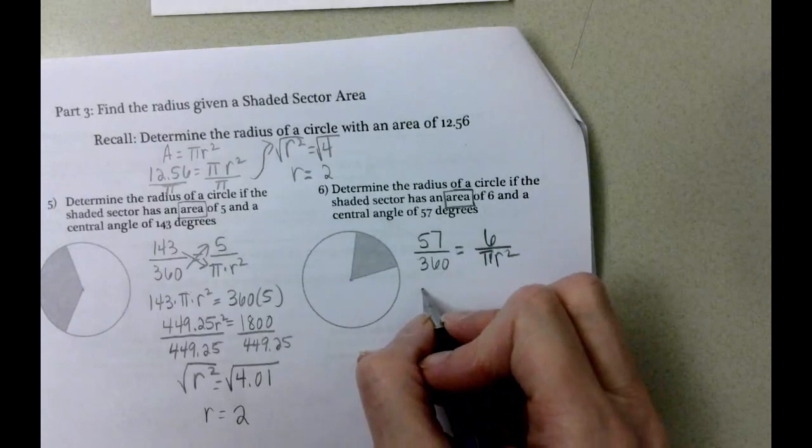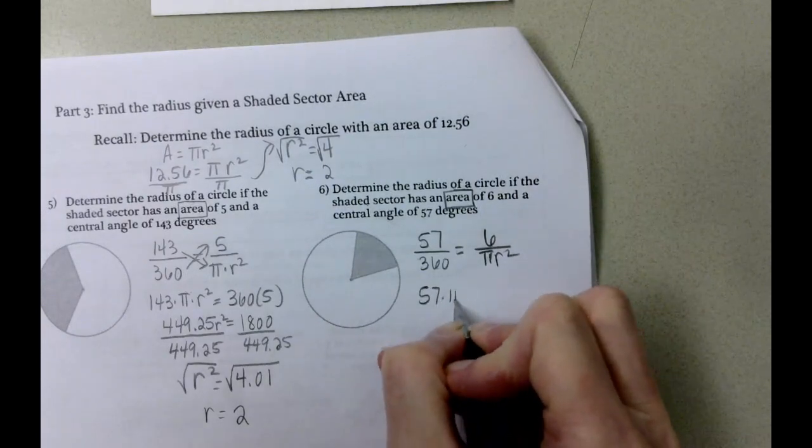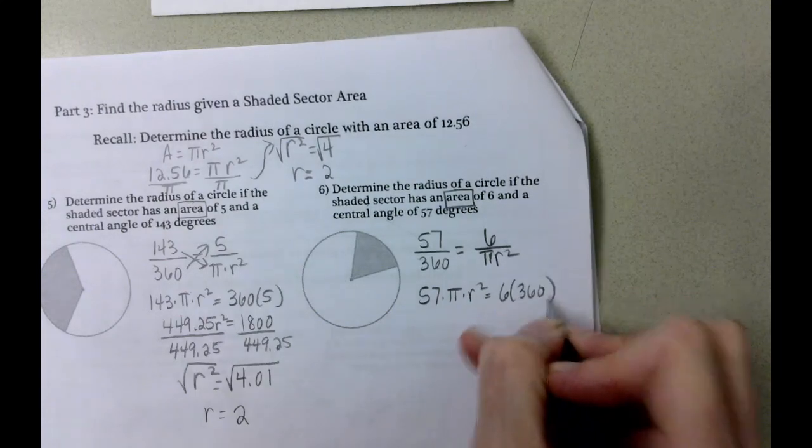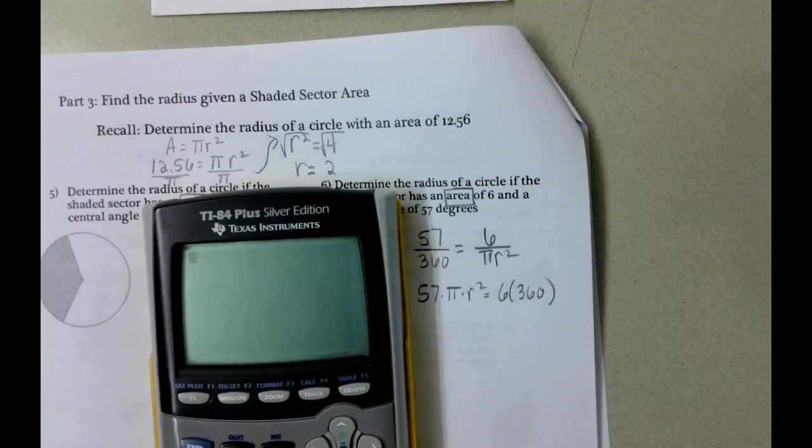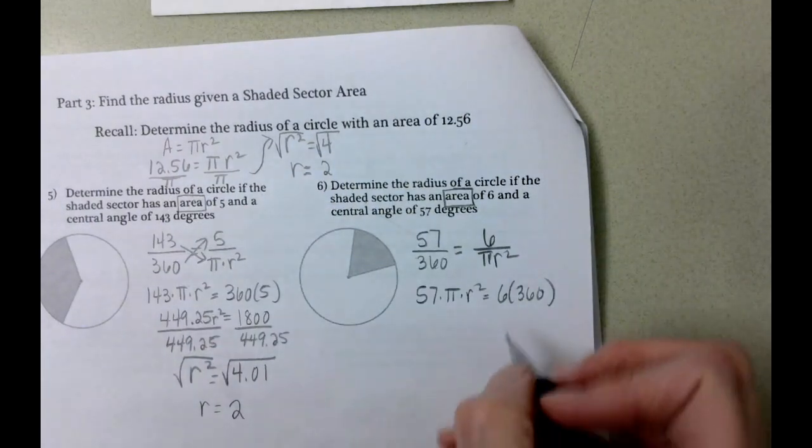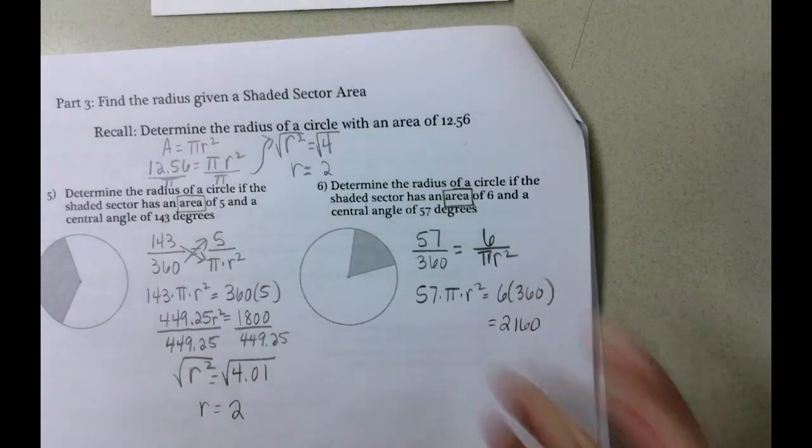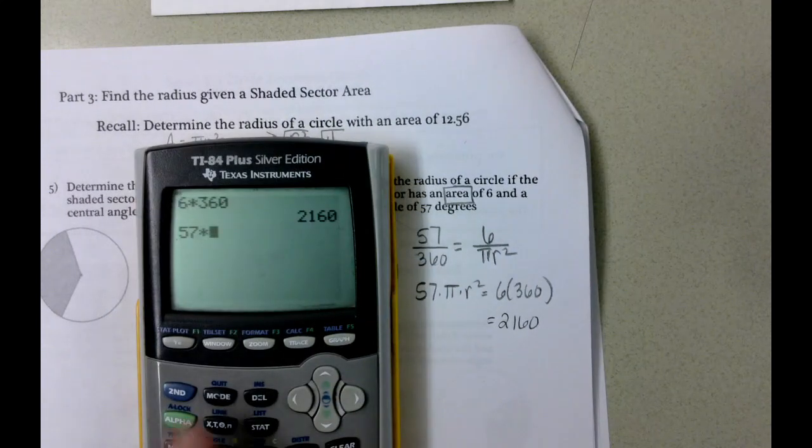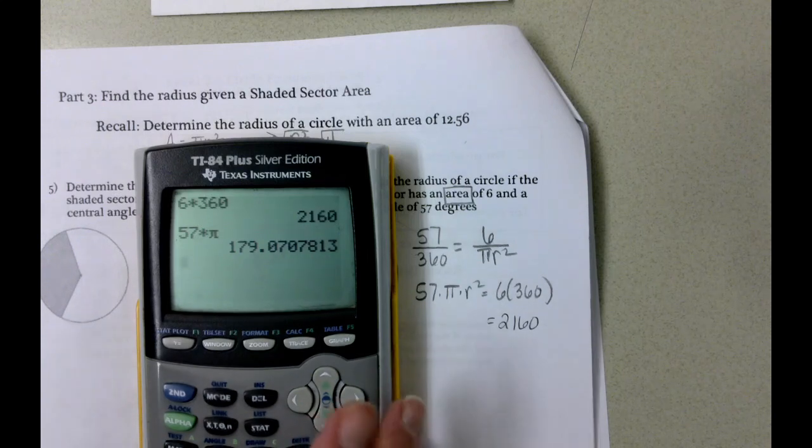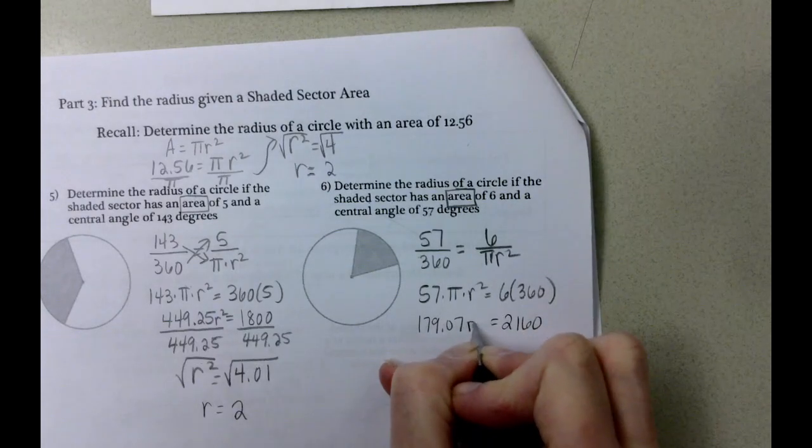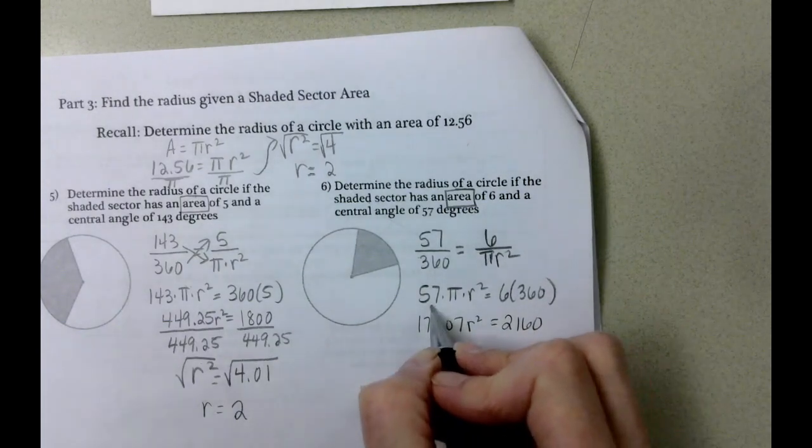So we cross multiply. 57 times pi times radius squared equals 6 times 360. 6 times 360 gives us 2160. And over here 57 times pi. You've got to be able to see it. Times pi. And then 179.07. Don't forget we only multiply 57 times pi.